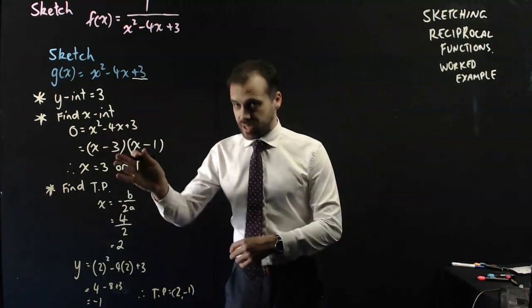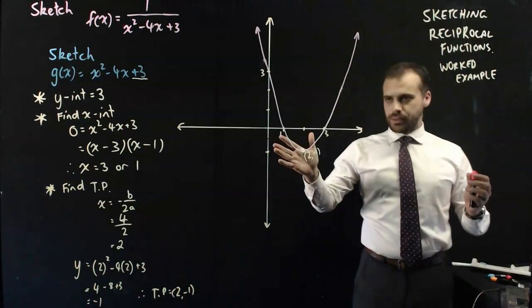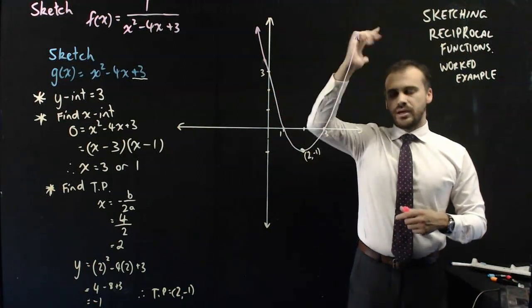So I have a y-intercept, I have an x-intercept, I have a turning point, and now I can sketch that quadratic. So I've done my best here. I've got x-intercepts, a y-intercept, a turning point, and I get a quadratic.